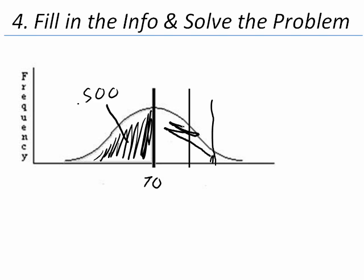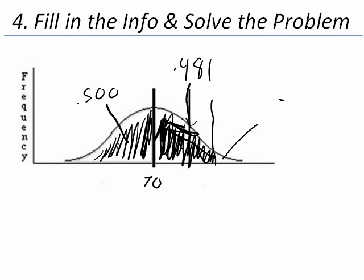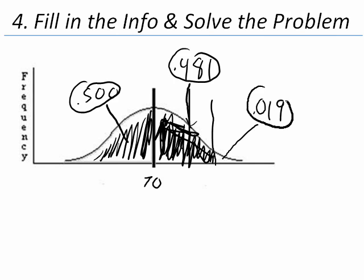So this whole area is equal to .481. That is, if we say .500 plus .481 plus .019, that's going to equal 1. But to solve our particular percentile problem, we're only interested in all the area that's below our value of 95.